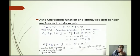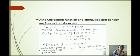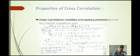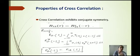The fourth property is that the autocorrelation function and energy spectral density are a Fourier transform pair. We know that the autocorrelation function R_ff equals f(t) convolved with f(minus t). Taking the Fourier transform on both sides, the Fourier transform of the autocorrelation gives the spectral density. Here is a proof you can see.